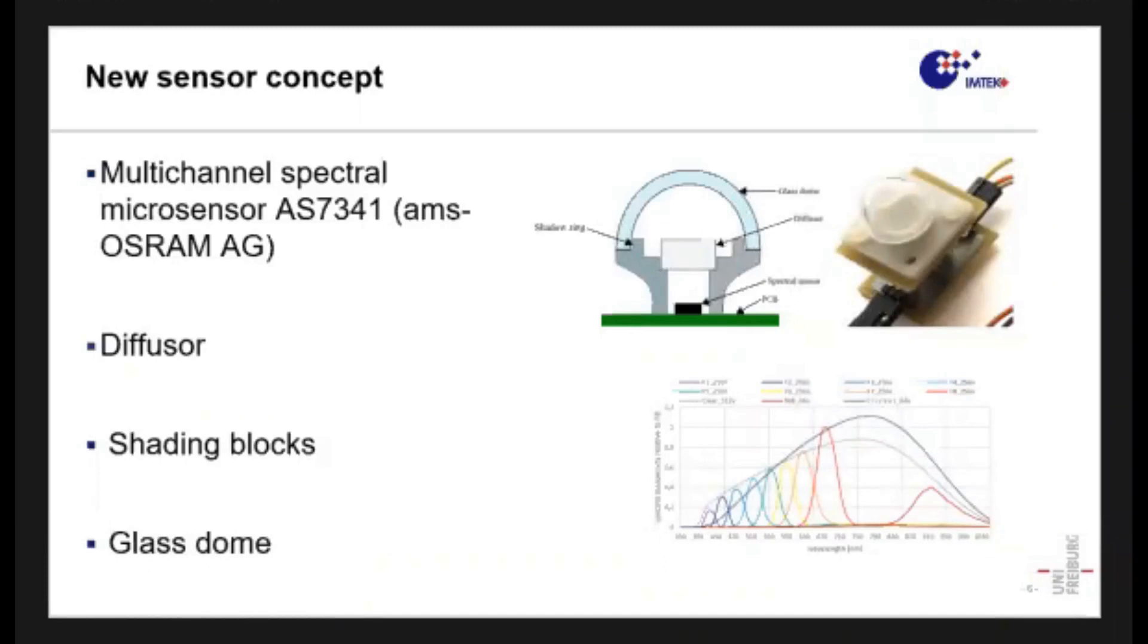A shadow ring guarantees that the light from the side is not entering, and finally a glass dome which is there to protect our system from moisture and dirt.